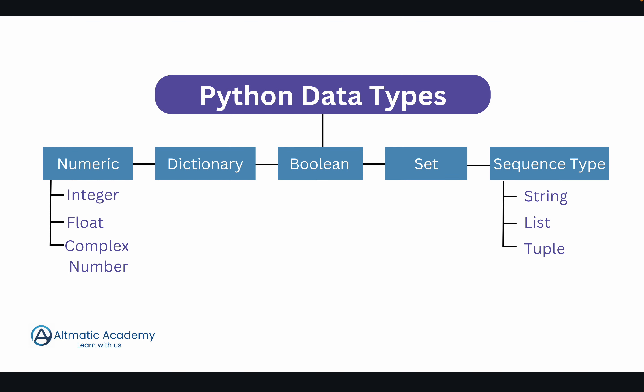The first data type is numeric — under numeric you have integer, float, and complex number. Integer and float we are already familiar with, but complex numbers are new, mostly used in mathematical or scientific calculations. Then there is dictionary. Boolean you are familiar with from every programming language. Set is new — we have already used sets in mathematics. Then sequence type, which includes 3 data types: string, list, and tuple. Let us see them one by one.